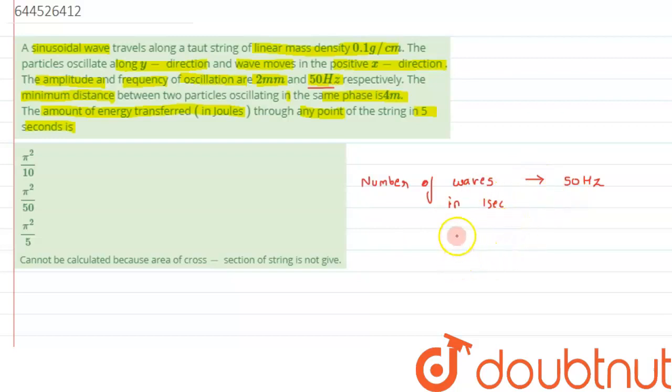Now for this, we have to calculate when the wave, one wave is going from one point to another point, or we can say when the one wave is crossing a particular given point on the string.